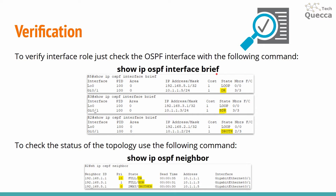In the output of show ip ospf interface brief, you will find the state for each interface on the current router for that network segment — for example, Designated Router, BDR, or DROther. To check neighbor status, use show ip ospf neighbor. The output shows the neighbor ID, priority, and state. For example, a router with router ID 192.168.1.1 with priority 10 would be shown as a Designated Router.